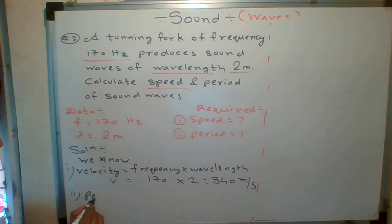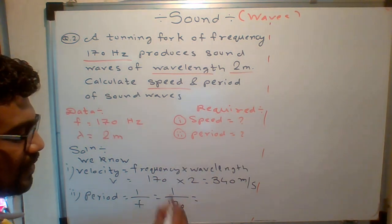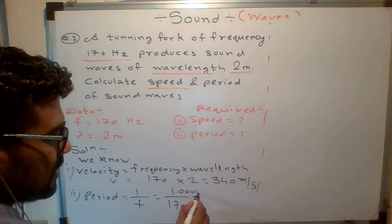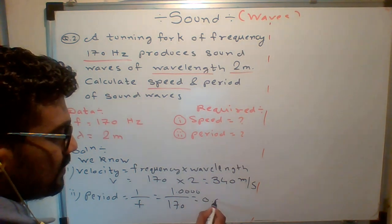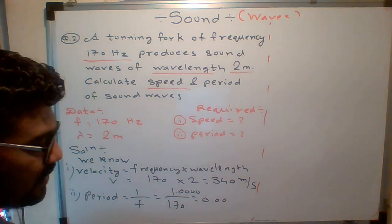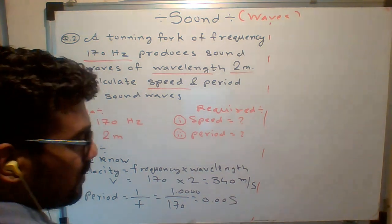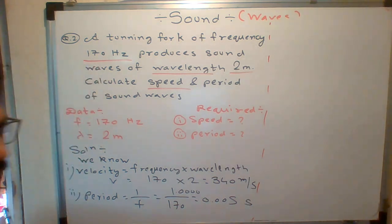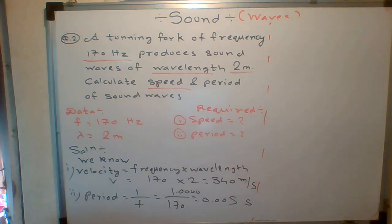How to find period? Period is the reciprocal of frequency, so 1 upon 170. You know that you can just put like this and divide: 1 divided by 170 equals approximately 0.005 seconds.